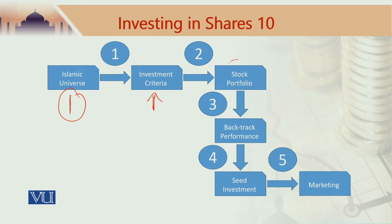Then comes the stock portfolio. This Islamic universe might have 50 stocks, 100 stocks, or in the case of a global universe, it could have 50,000 Sharia compliant stocks. As a fund manager, you are going to pick only a handful of stocks to be put into your fund. Based on your investment criteria, you would pick up stocks — the stocks which you think are going to be good for the profitability of the fund. This is called stock picking.